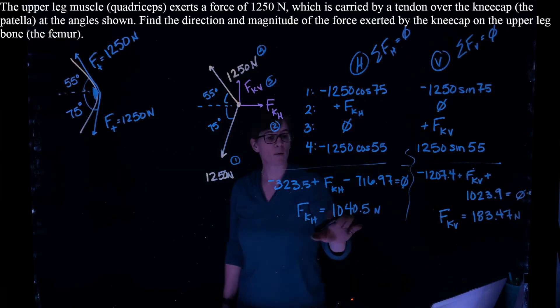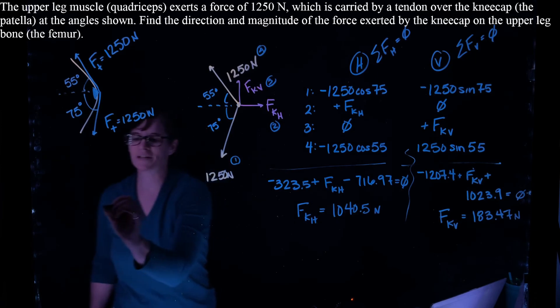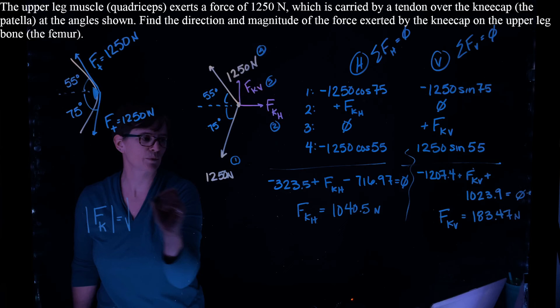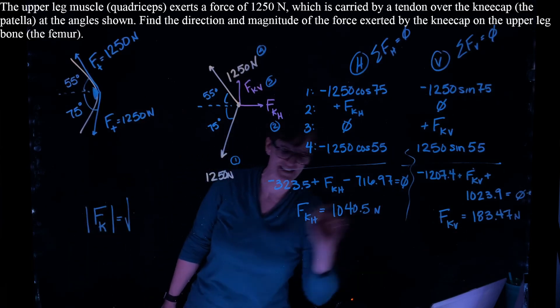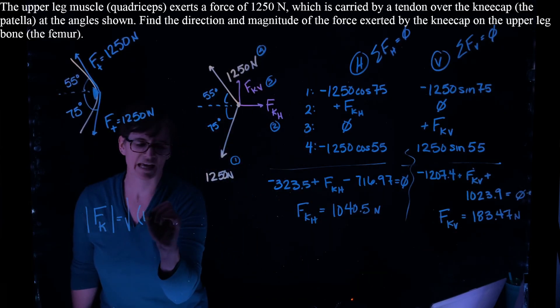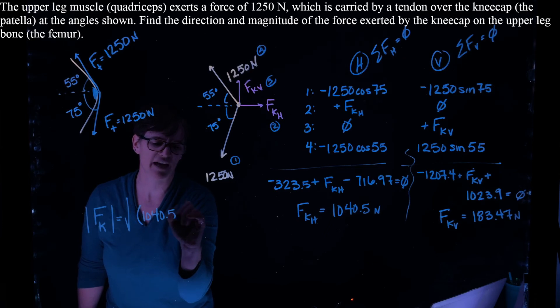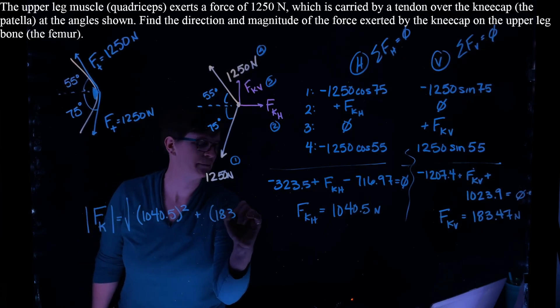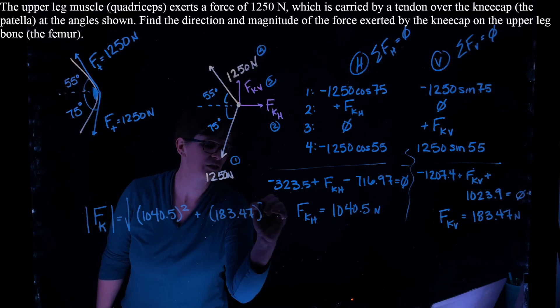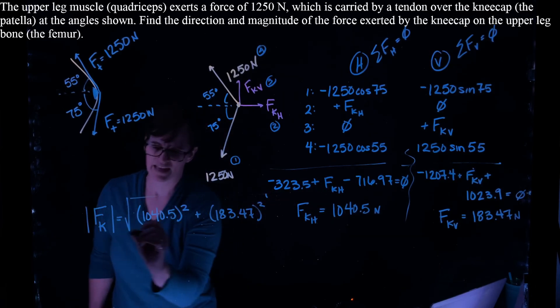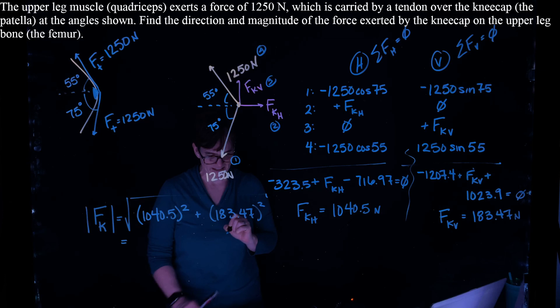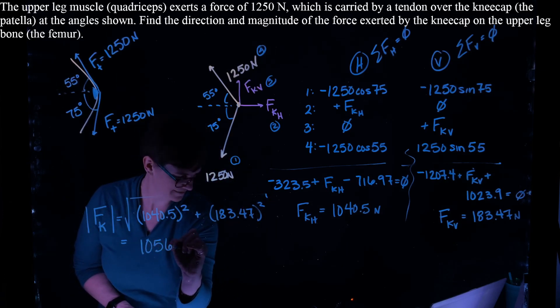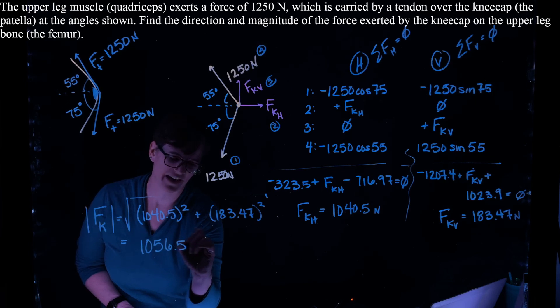So I have my horizontal and vertical components. I can get the magnitude of the force of that knee as the square root of the sum of these squares. So 1040.5 squared plus 183.47 squared. And if I take the square root of that, I get a magnitude of 1056.5 newtons.